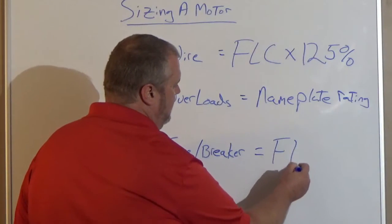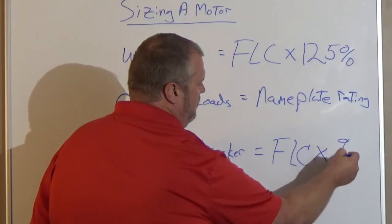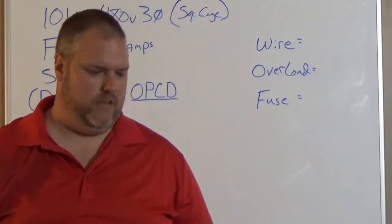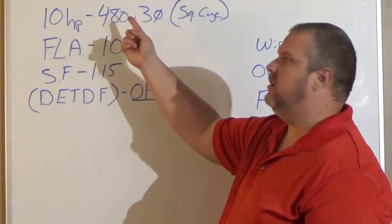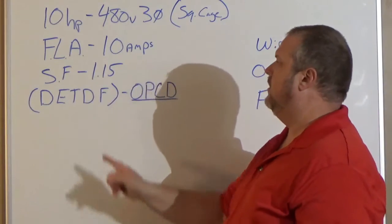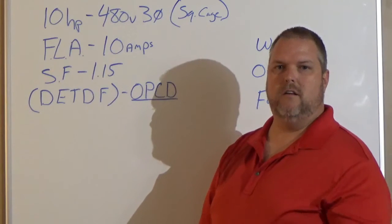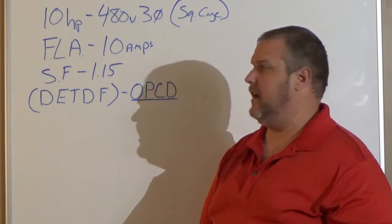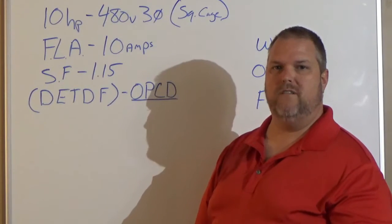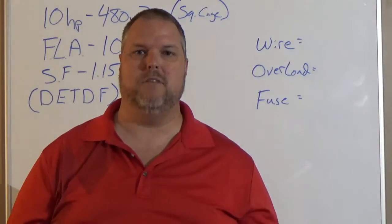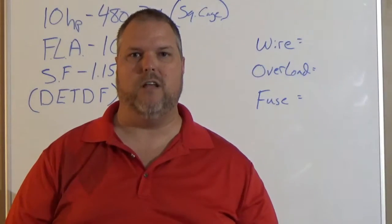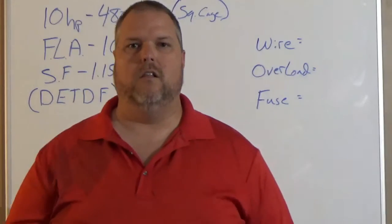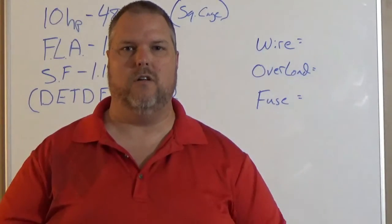We have a 10 horsepower, 480 volt, three-phase squirrel cage motor. We have a nameplate rating or a full load amp of 10 amps. So this 10 horsepower motor is drawing 10 amps. We have a service factor of 1.15. And this is going to be a dual element time delay fuse. So this is all the information we need to know to size our wire, our overload, and our fuse. Let's break it down. We'll do wire first, then we'll do overload, then we'll do fuse.